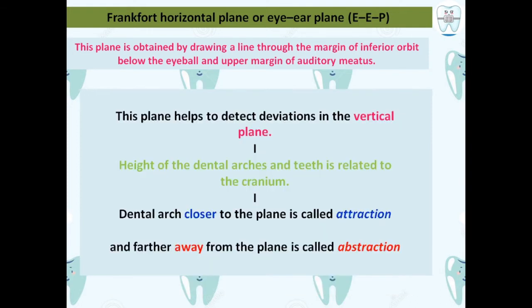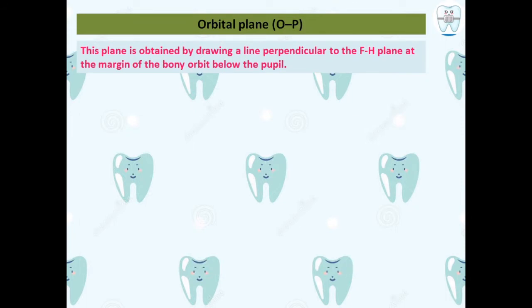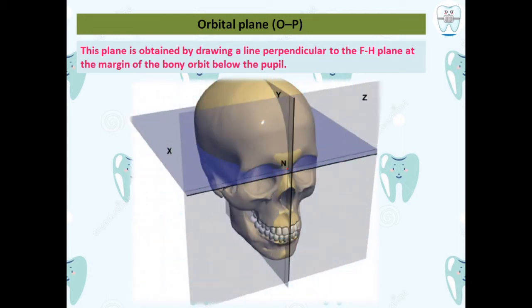Next is the orbital plane. This plane is obtained by drawing a line perpendicular to the FH plane at the margin of the bony orbit, below the pupil. That is the orbital plane.